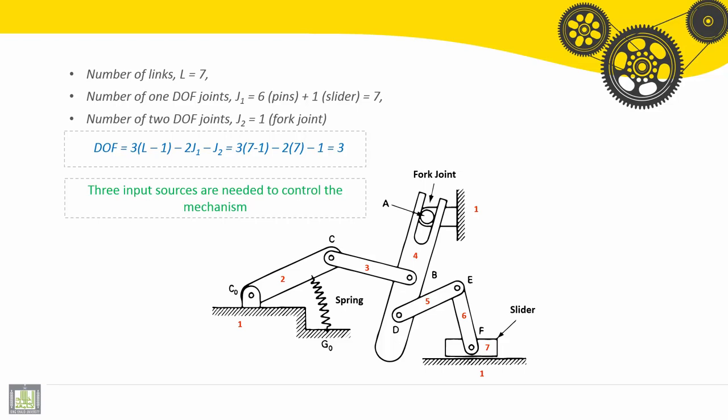This mechanism. Total number of links is seven, including the ground: 1, 2, 3, 4, 5, 6, and 7 solids.